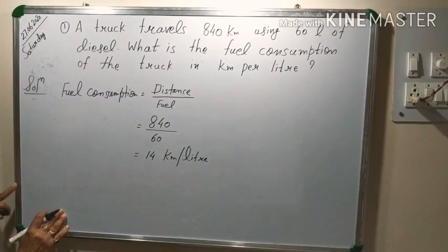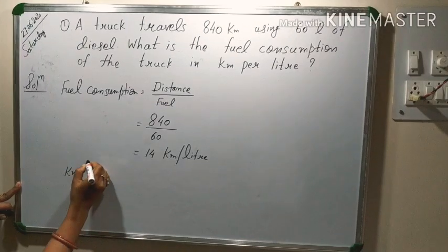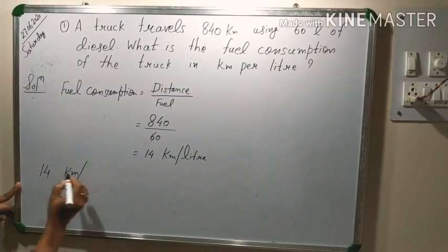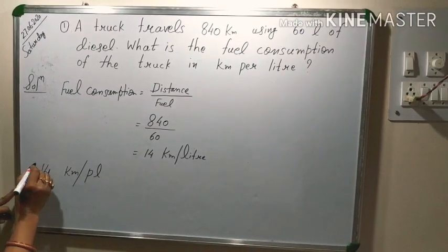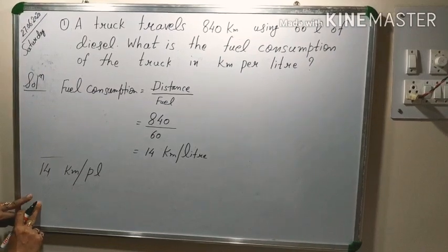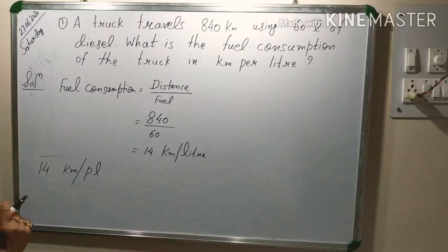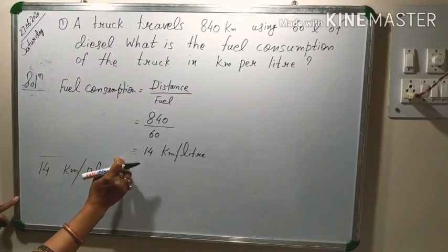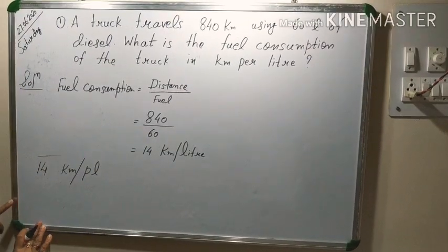So many students wrote like this. They wrote 14 km and unit they are writing PL. So if you don't write the unit correctly, you will lose the marks. Many students made this mistake and they have lost the marks. Many students only wrote this numerical value 14 and they didn't write the unit. So those students also have lost the marks.